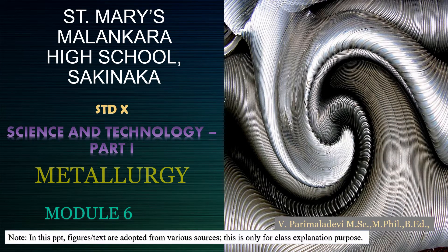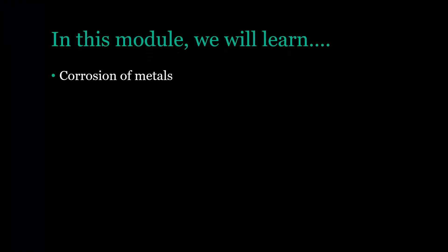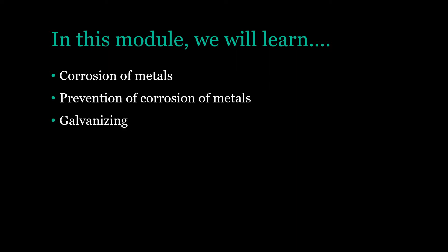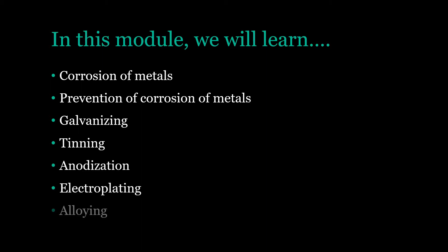Hello students, I welcome you all for the 6th module of Science and Technology Part 1, metallurgy chapter. In this module, we will be learning about corrosion of metals, prevention of corrosion of metals — specifically about galvanizing, tinning, anodization, electroplating and alloying.